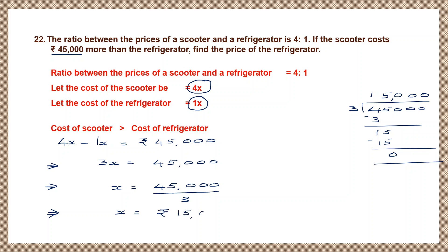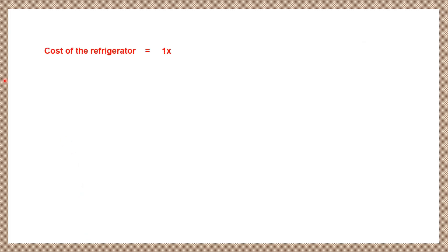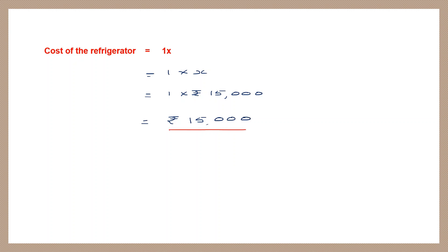The cost of the refrigerator is 1x, that is 1 into 15,000, which is 15,000 rupees. We were asked to find only the cost of the refrigerator, so our final answer is 15,000 rupees. With this, we come to the end of this exercise. Thank you, children.